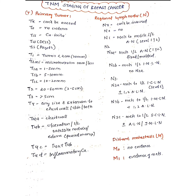For distant metastasis: M0 means there is no evidence of distant metastasis, and M1 means there is evidence of distant metastasis. This completes the TNM staging framework for breast cancer.